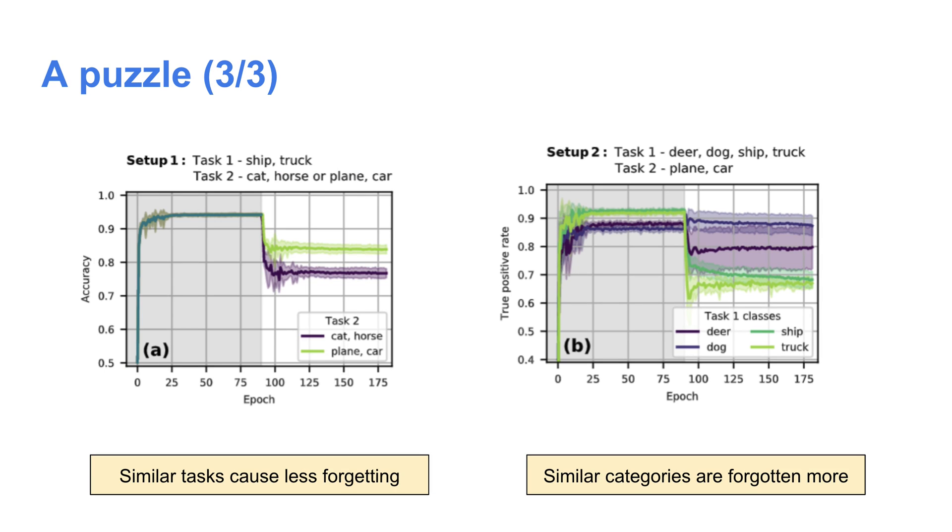So this is the puzzle. The results of the previous two slides seem to be in tension with one another. In the first scenario, it seemed like similarity between tasks was beneficial from the perspective of forgetting, while in the second scenario, it seemed like similarity hurt performance. So how do we resolve this tension and precisely understand the effects of semantics on forgetting?